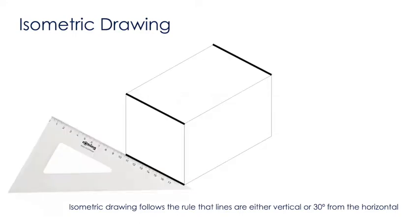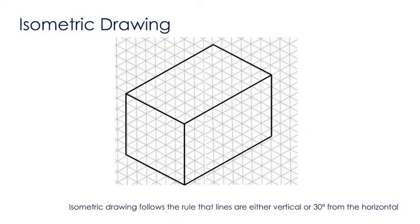We can either use a set square to measure 30 degrees, or we can use isometric paper like this. As you can see, the lines on this cuboid all follow the 30 degree lines or the vertical lines on this isometric paper.